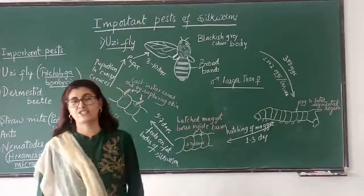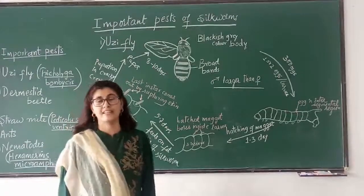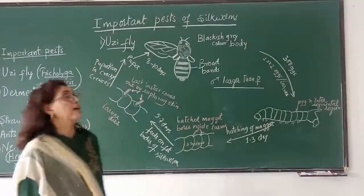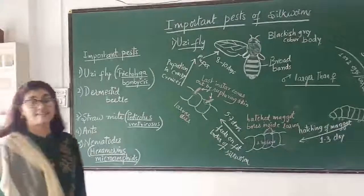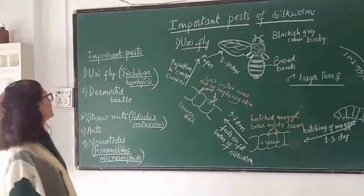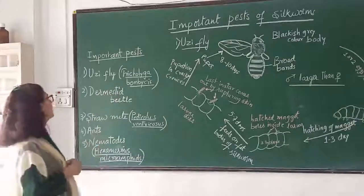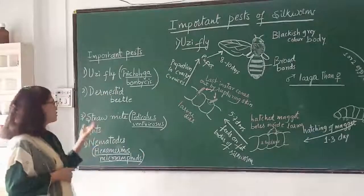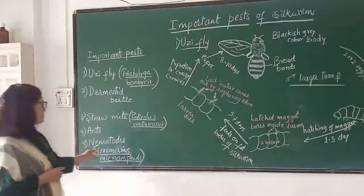In this lecture series on silkworm, today we shall be studying important pests of silkworm. Among the different pests that affect silkworm, the most important ones are oozyfly, triglyphoride, flower bondices, domestic beetle, straw mite, ants, and nematodes.